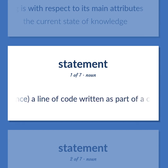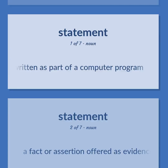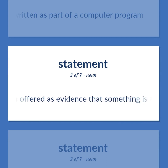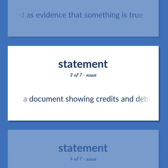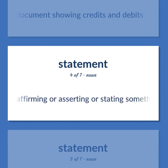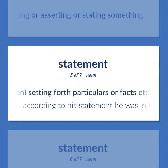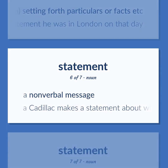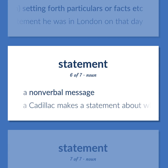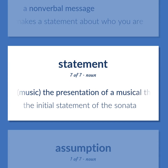Statement: computer science — a line of code written as part of a computer program. A fact or assertion offered as evidence that something is true. A document showing credits and debits. The act of affirming or asserting or stating something. A message that is stated or declared; a communication, oral or written, setting forth particulars or facts — 'According to his statement he was in London on that day.' A non-verbal message — 'A Cadillac makes a statement about who you are.' Music: the presentation of a musical theme — 'The initial statement of the sonata.'